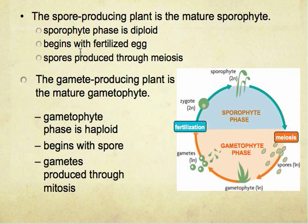It begins with fertilized eggs. As you can see, the sperm and the egg cell, when they are separate, are haploid. But after the process of fertilization, it becomes 2N — N from mom and N from father — and it becomes a diploid cell. That's why it begins with the fertilized egg, and spores are produced through meiosis.